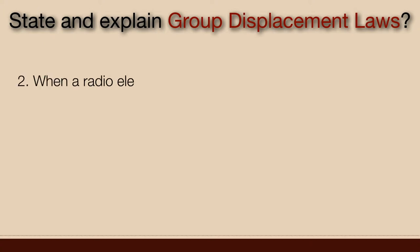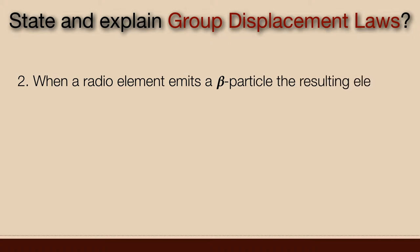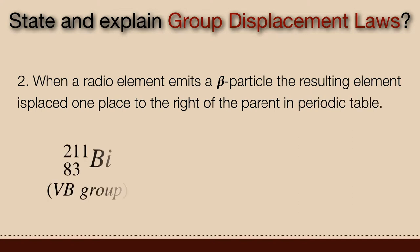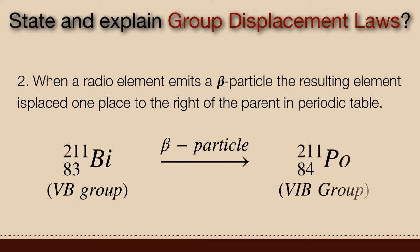When a radioactive element emits a beta particle, the resulting element is placed one place to the right of the parent in the periodic table. For example, bismuth-211 on emission of a beta particle produces polonium-211. Bismuth belongs to the fifth B group while polonium belongs to the sixth B group.